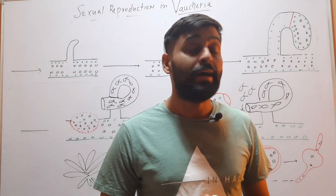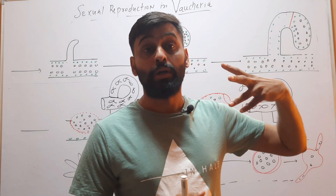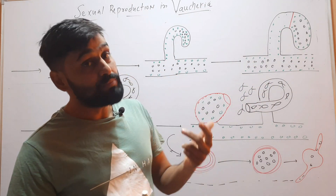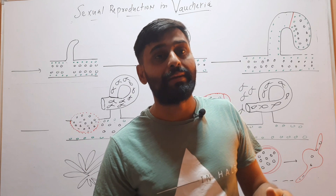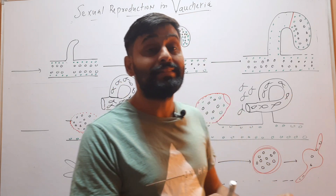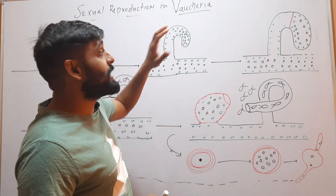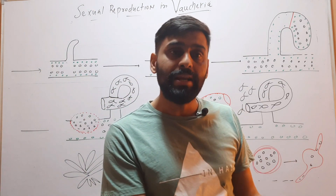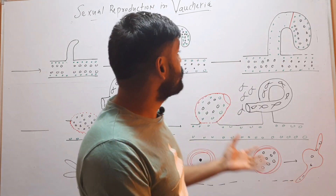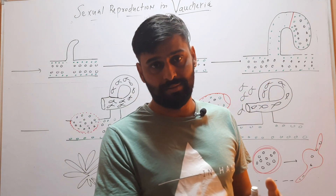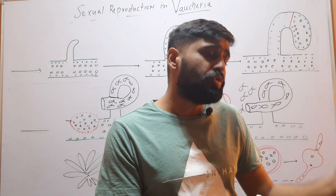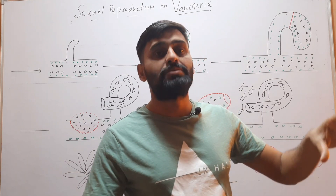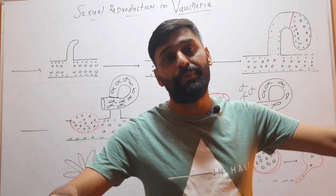Sexual reproduction in Vaucheria is oogamous type. In oogamous reproduction, the male gamete is smaller in size and motile, while female gametes are larger in size and non-motile. Mostly Vaucheria is monoecious, in which male and female reproductive structures are formed on the same thallus. But a few species are also dioecious, in which male and female reproductive structures are formed on separate thalli.